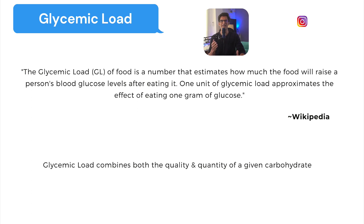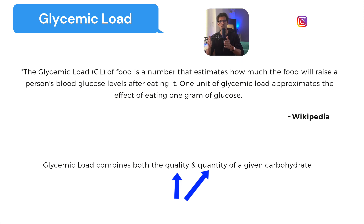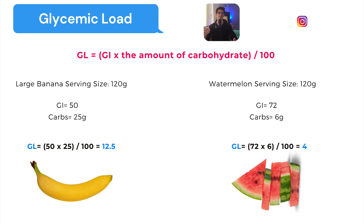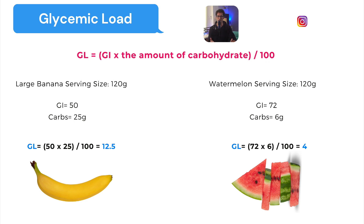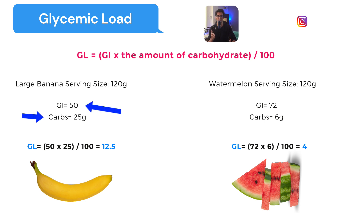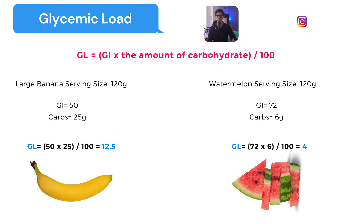According to Wikipedia, the glycemic load (GL) of a food is a number that estimates how much the food will raise a person's blood glucose levels after eating it — one unit of GL approximates the effect of eating one gram of glucose. Glycemic load combines both the quality and quantity of a given carbohydrate food. The formula is: GL = (GI × grams of carbohydrate) ÷ 100. For example, a large banana (120g serving) has a GI of 50 and 25g of carbohydrates, giving a GL of (50 × 25) ÷ 100 = 12.5.